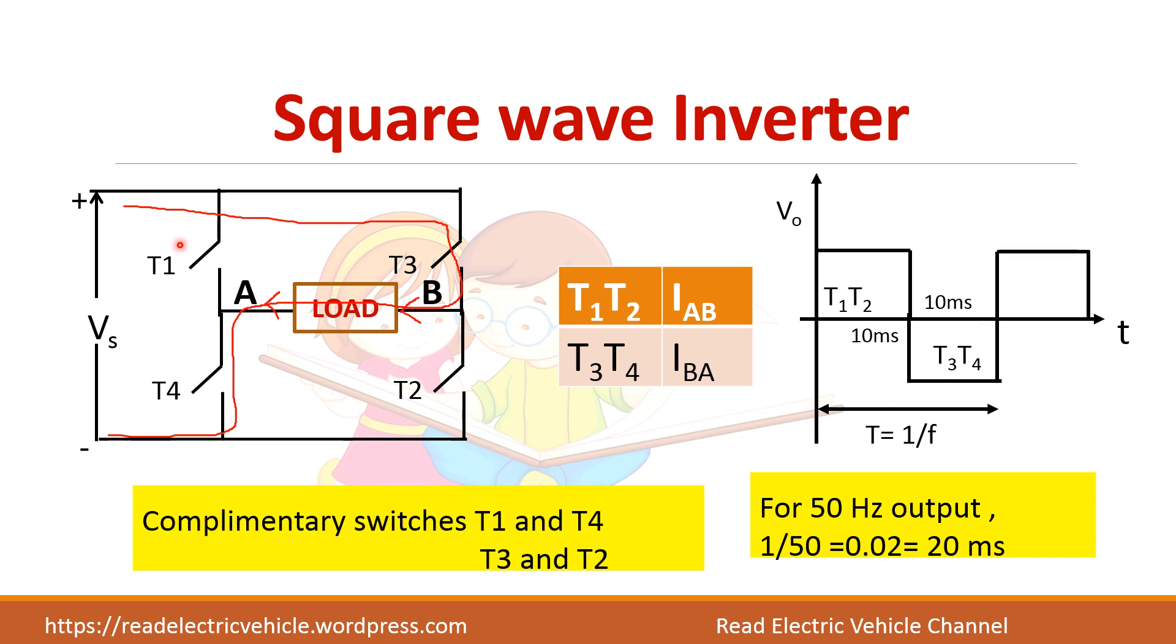Here if you see, when T1 is on, T4 should be off. If both are on at the same time this DC supply will get shorted. So T1 and T4 are said to be complementary switches. Similarly T3 and T2 are complementary switches, meaning that only one of the switches can be on at any time. Don't turn on both the switches at the same time, it will short the supply. So they are said to be complementary switches.